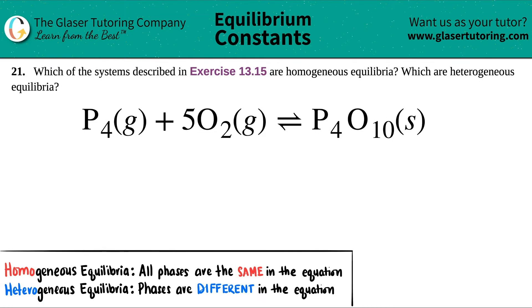Number 21. Which of the systems described in exercise 13.15 are homogeneous equilibria and which are heterogeneous equilibria? So I pulled up one of the balanced equations from that exercise. We have to figure out if P4 gas plus 5O2 gas, which comes to equilibrium with P4O10 solid, whether this is homogeneous equilibrium or heterogeneous equilibrium. How do we figure that out?